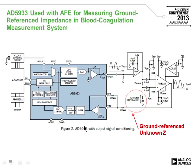Another application is measuring the impedance of blood, which indicates the clotting factor and how well blood actually clots—important for identifying hemophilia quickly. This circuit has the unknown impedance referenced to ground. The output is buffered and driven through a very low-value sense resistor into the unknown impedance. The current through the impedance is measured by amplifying the voltage across the sense resistor with a traditional instrumentation amplifier, then passing it back into the AD5933's current input.